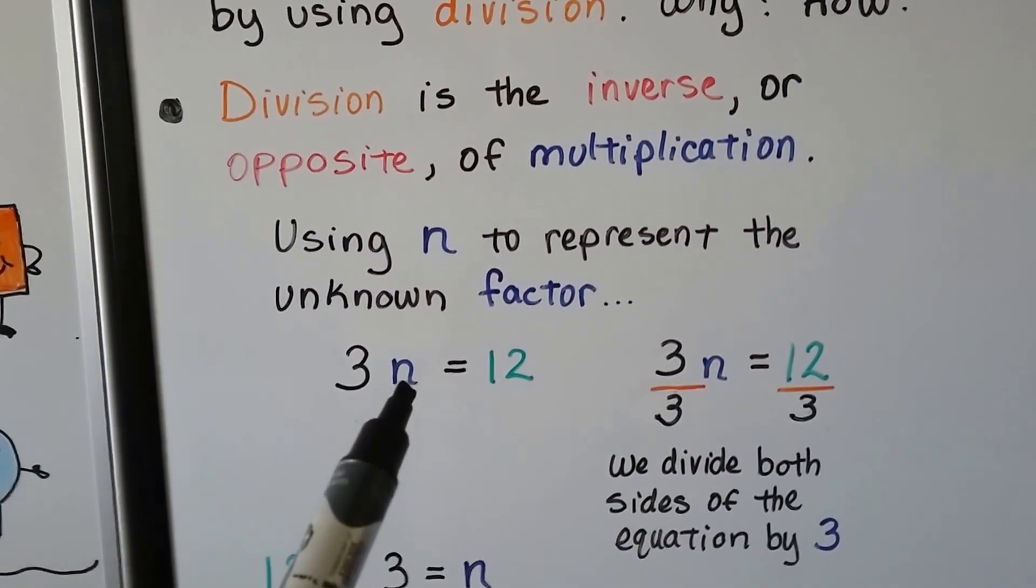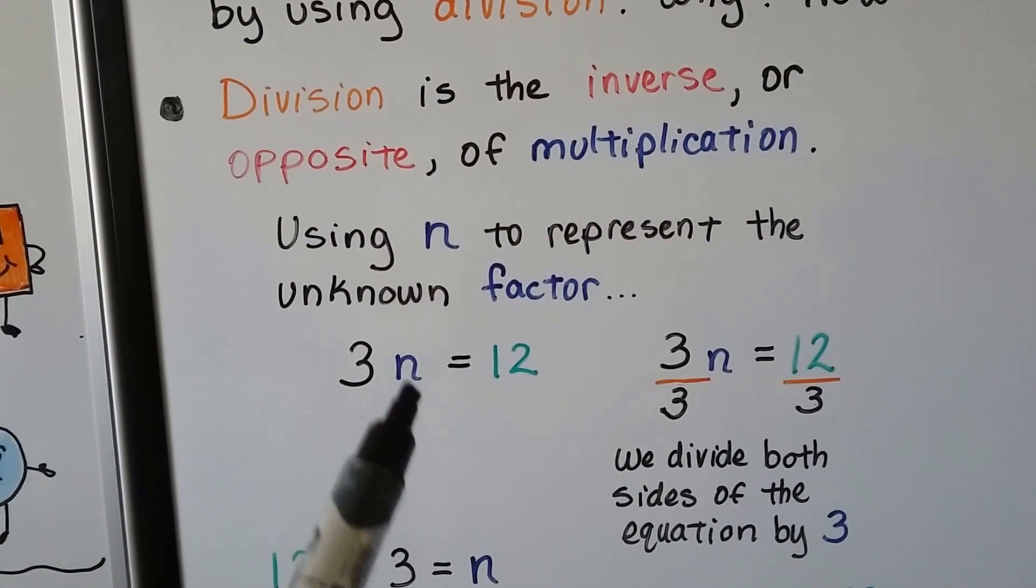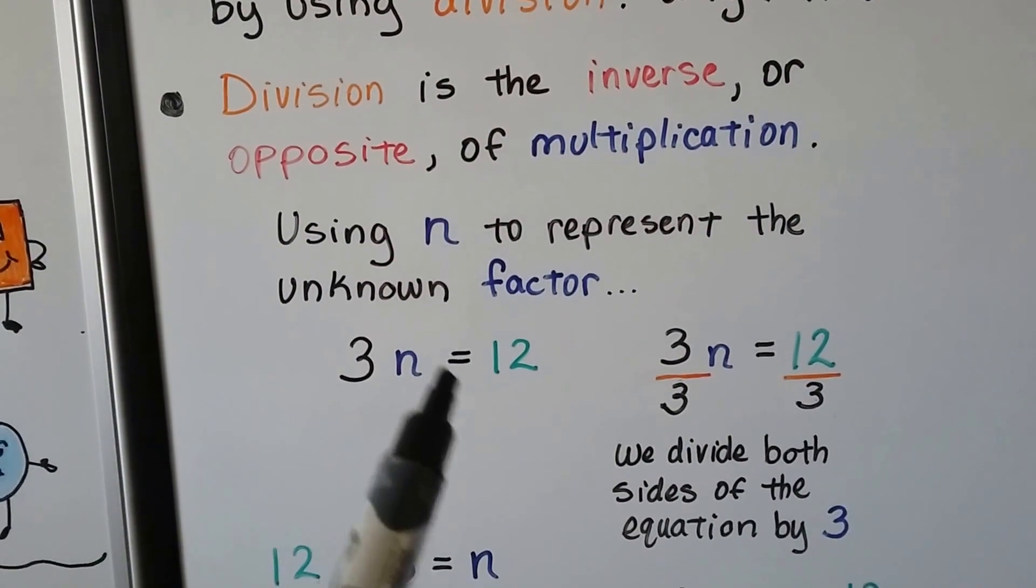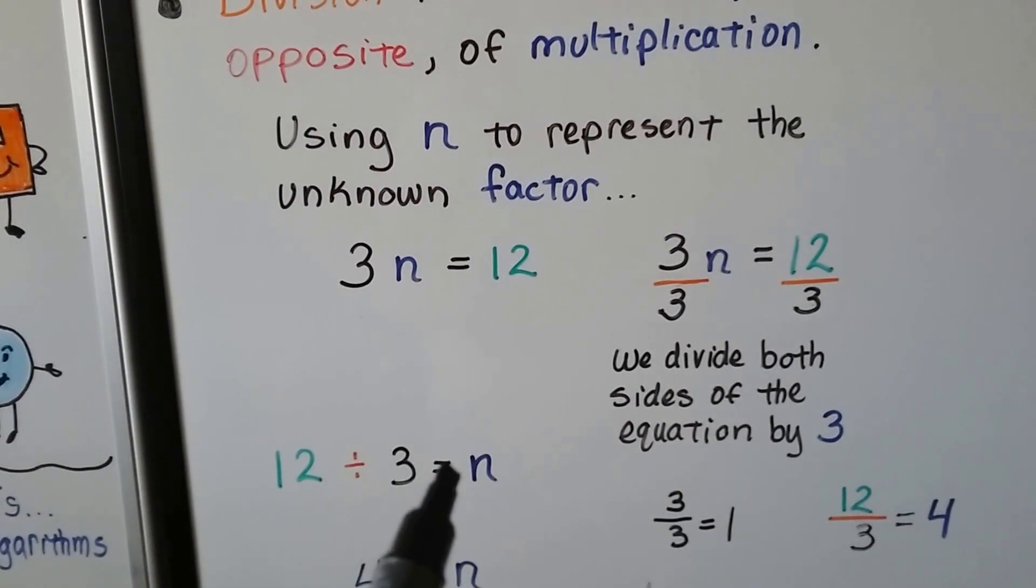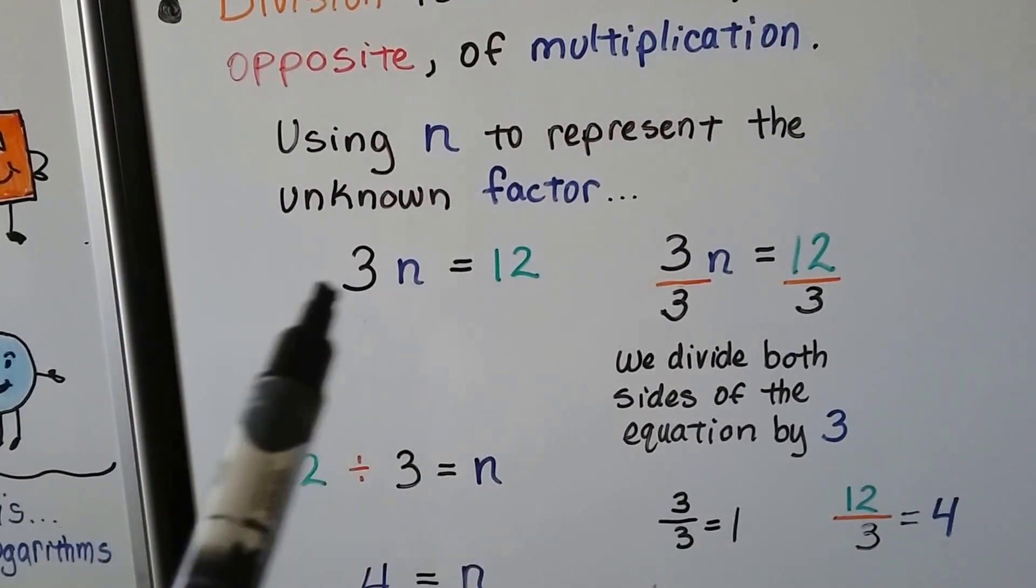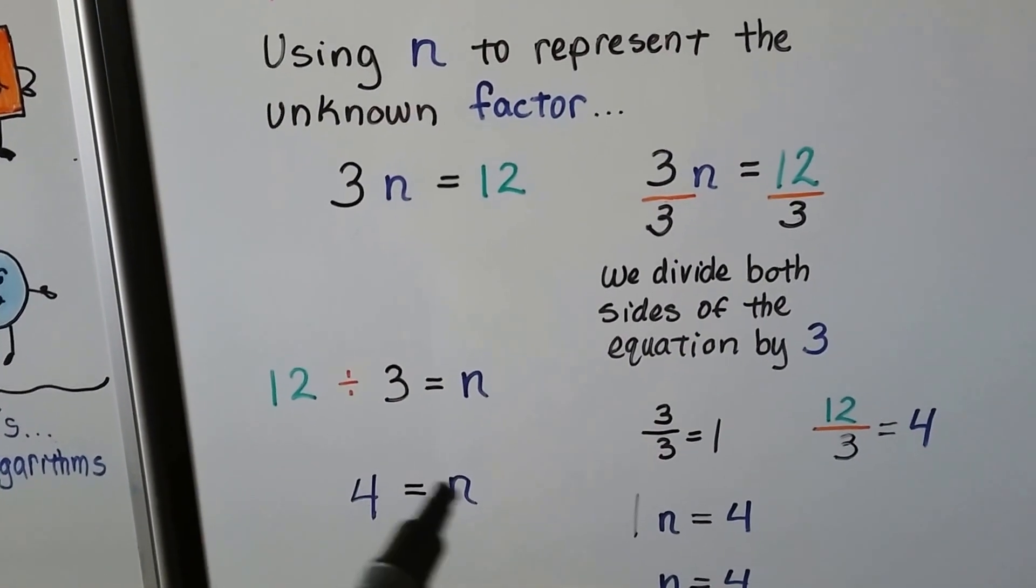When a number is next to a variable, that means to multiply. This is the coefficient, that's the variable. 3n equals 12 can be thought of as 12 divided by 3 equals n because we go the inverse direction. We do the opposite of the multiplication. Then 4 equals n.